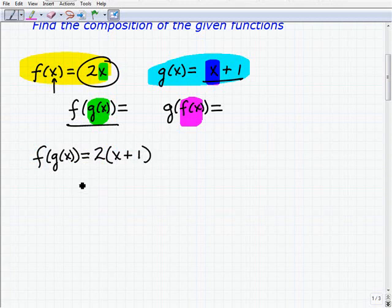Okay, and that's all there is to do as far as the setup goes. Now we simply need to go ahead and simplify by distributing this 2. So you should have 2x plus 2. That's f of g of x.